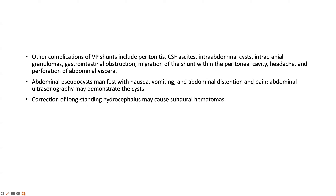Other VP shunt complications include peritonitis, ascites, intraabdominal abscess, intracranial granulomas, gastrointestinal obstruction, migration within the peritoneal cavity, abdominal visceral perforation, and even extrusion through the anus. Abdominal pseudocyst is not uncommon, presenting with nausea, vomiting, abdominal distension and pain, readily demonstrated by abdominal ultrasonography. Correction of long-standing hydrocephalus with a very low-pressure valve can cause subdural hematomas due to sudden decompression, causing bridging vein rupture as the brain shrinks.